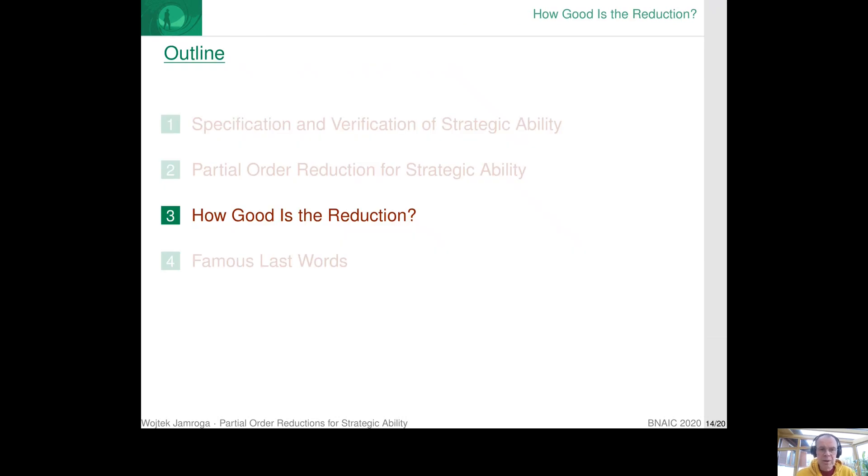So this is the theoretical result. It says that we can take the reduction scheme known for almost 30 years off the shelf. We can do the reduction. And it's also theoretically good for the properties that we want to specify and verify for multi-agent systems.